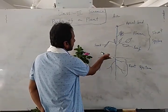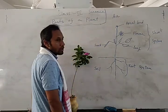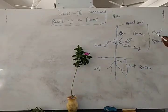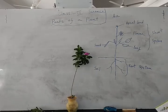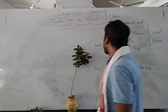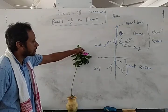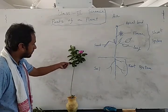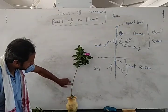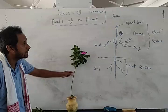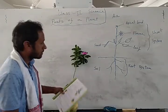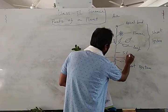The part that grows above the soil is called the shoot system. The shoot system contains various colorful parts — look at the beautiful colors. There is the flower, the leaf, and the main portion called the stem — S-T-E-M. The stem, or branch.